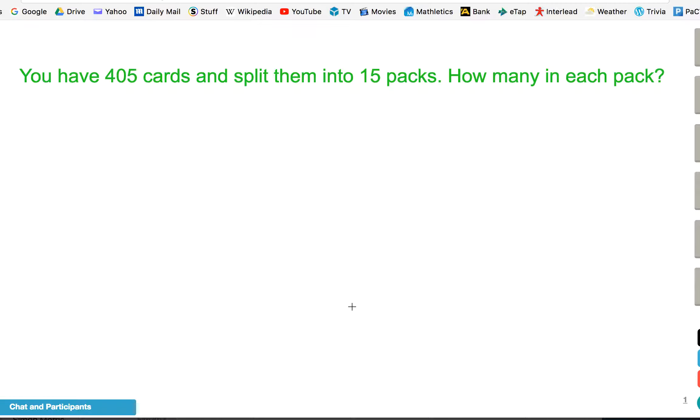In this example, we have 405 cards, and we're going to split them into 15 packs. So we're doing 405 divided by 15. We lay it out just like we have been with short division, but in this case, we've got a bigger number on the outside here. It's not a single-digit times table number, so it's going to require a little bit more work.